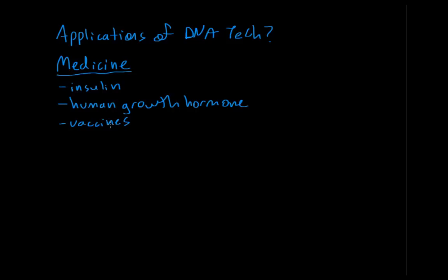This is much safer, cheaper, and produces a better immune response. Some vaccines that we actually use recombinant DNA technology to create include the Hepatitis B virus, the herpes virus, and malaria.